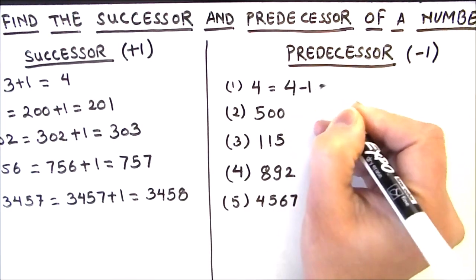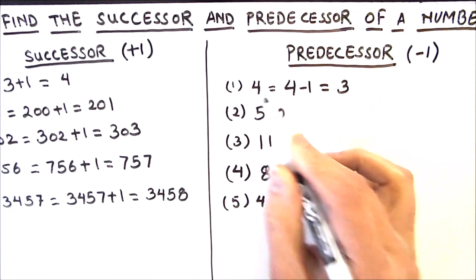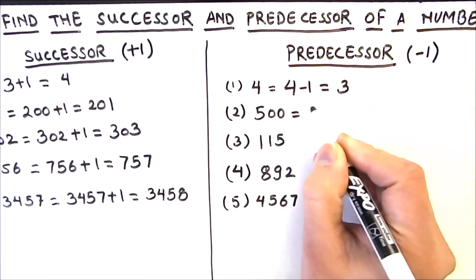So 4 minus 1 is 3, so predecessor of 4 is 3. Next we have 500, and predecessor of 500 will be 499.